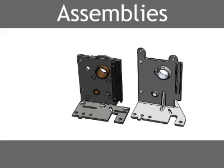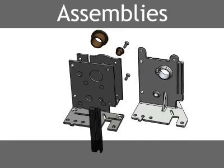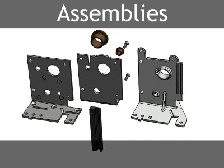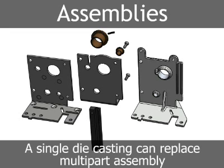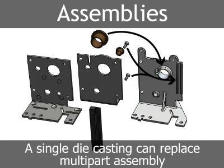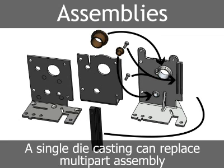Assemblies present major opportunities for a die cast product advantage. In many product applications, the individual parts of a multiple part assembly can be combined onto one die cast part. Combining multiple part assemblies into one die cast part leads to reduced cost and often improved reliability. Replacing multiple part assemblies with a single die casting is one of the most powerful design advantages provided by die castings.